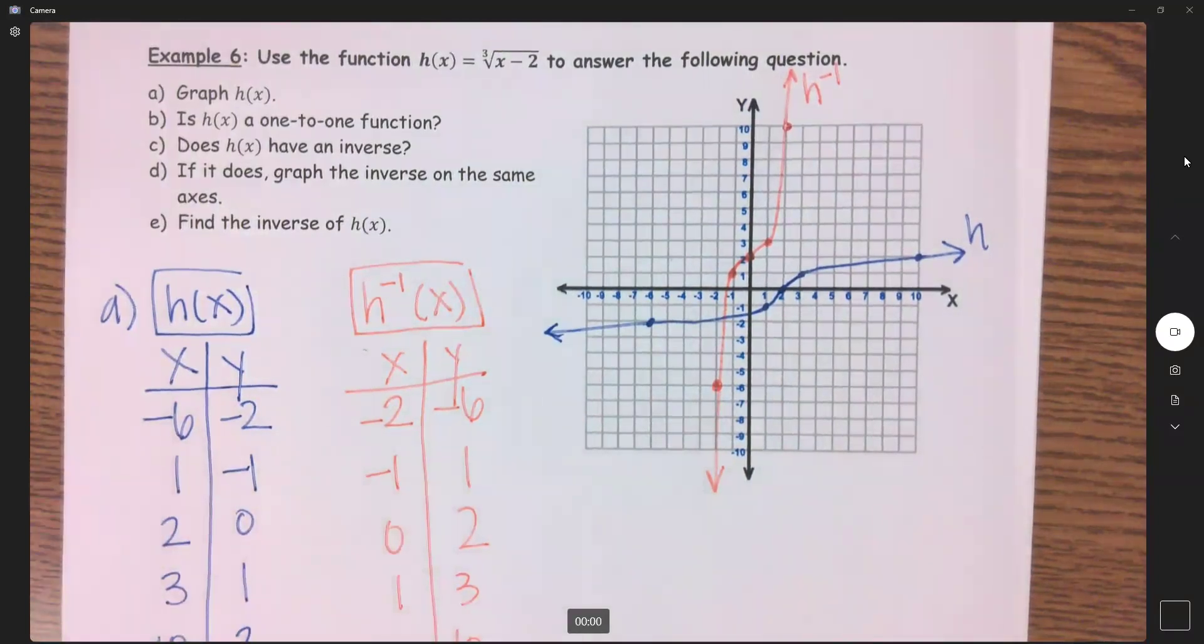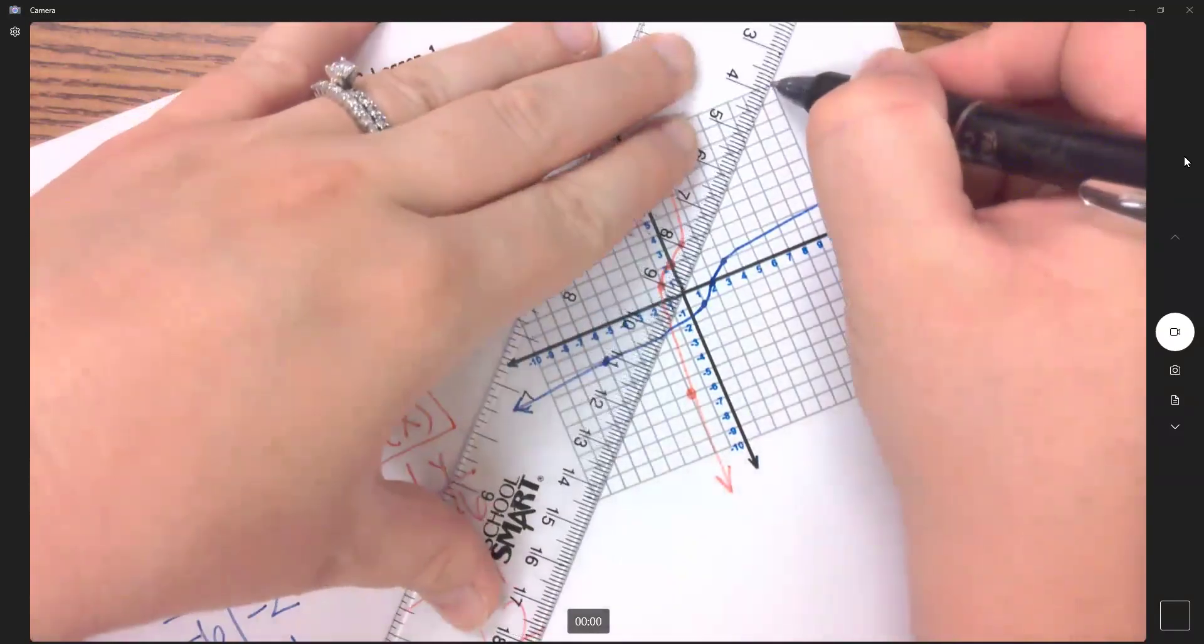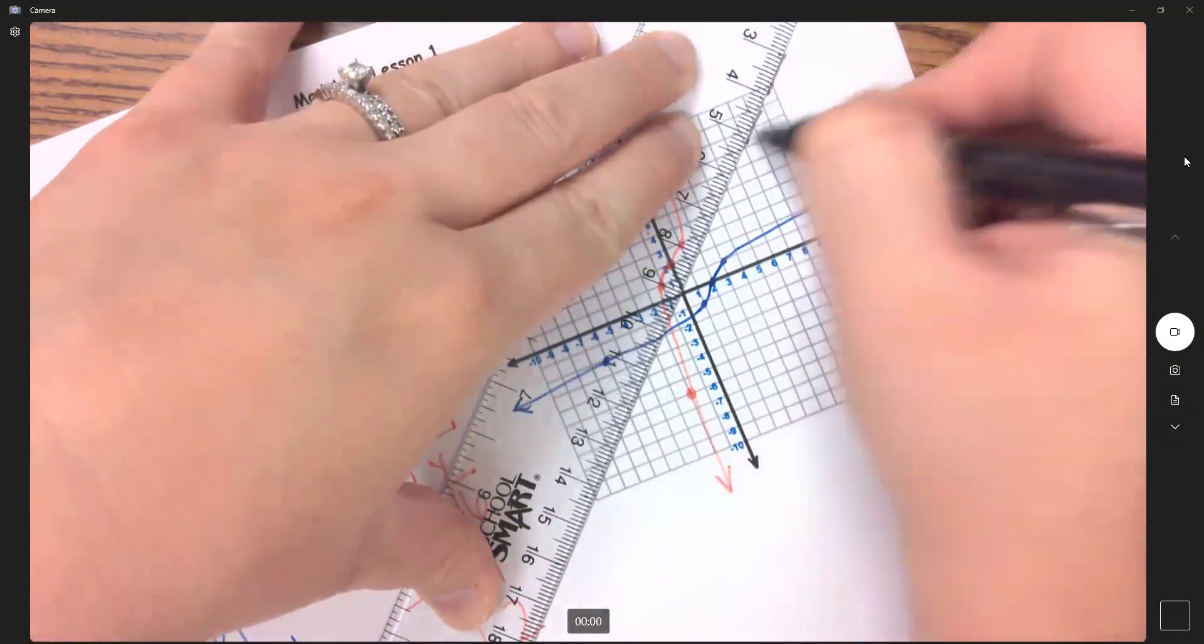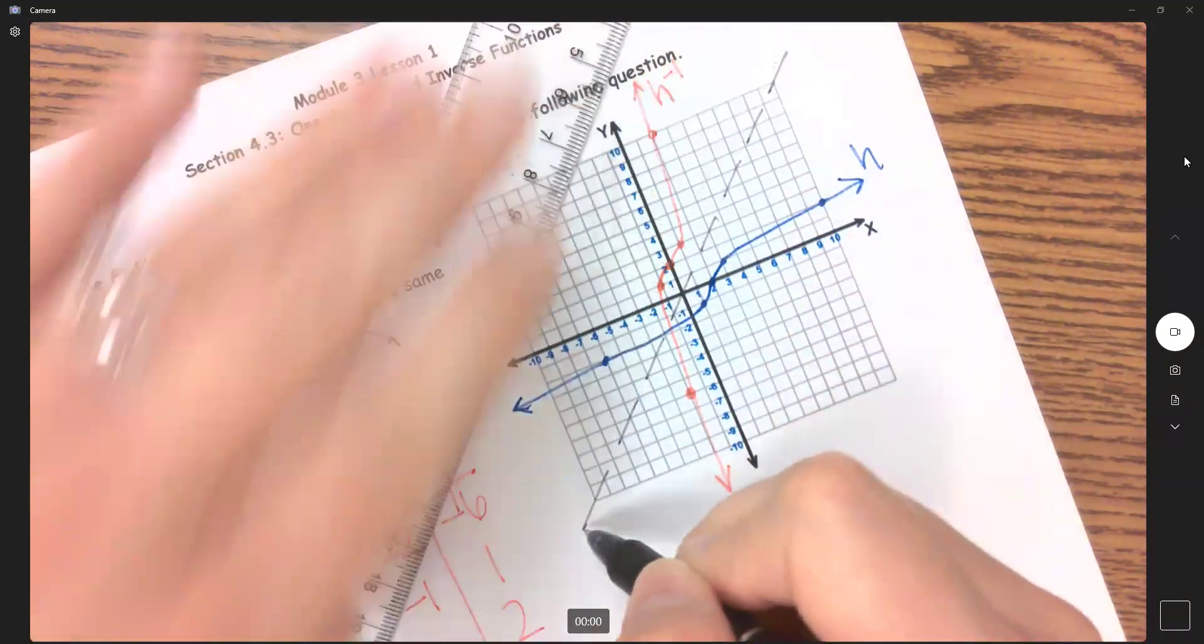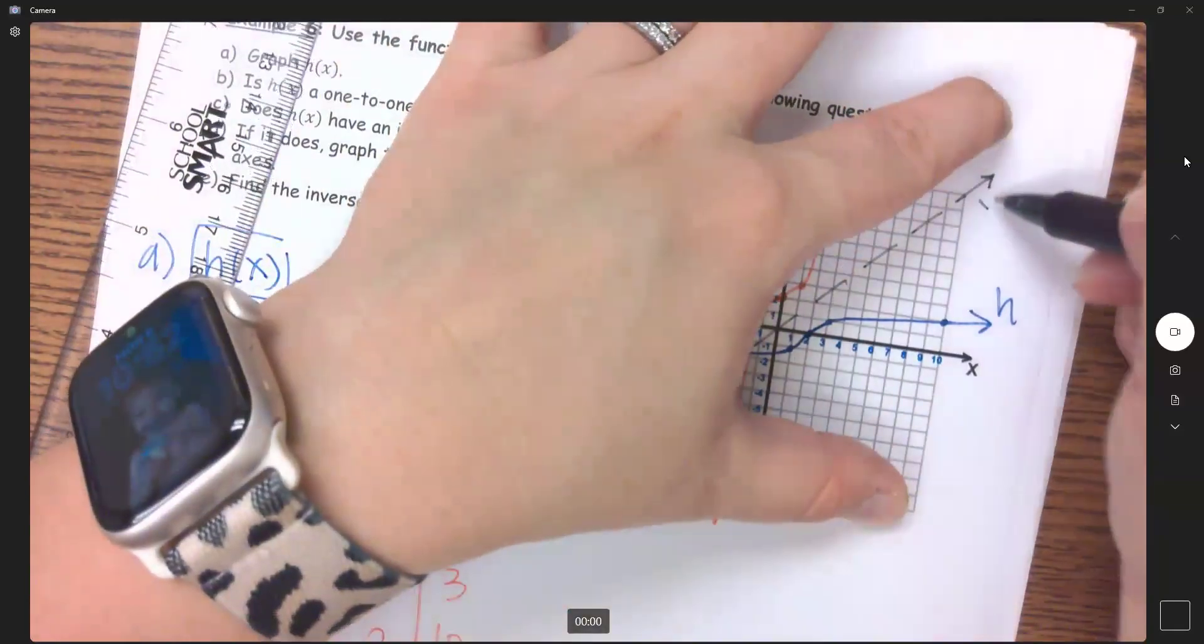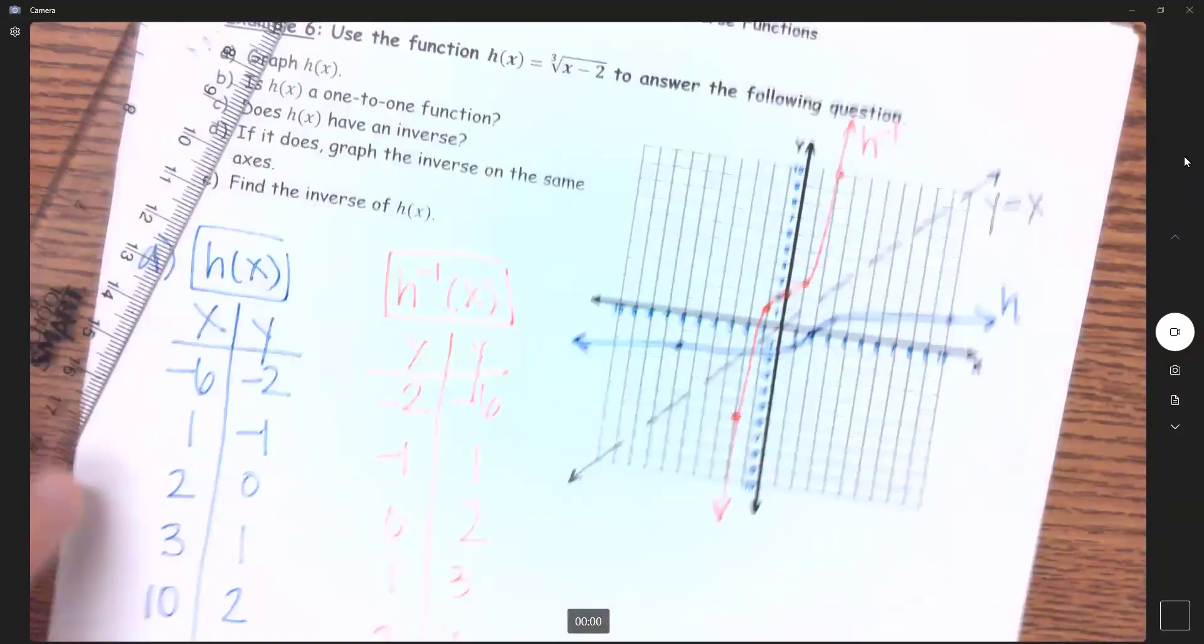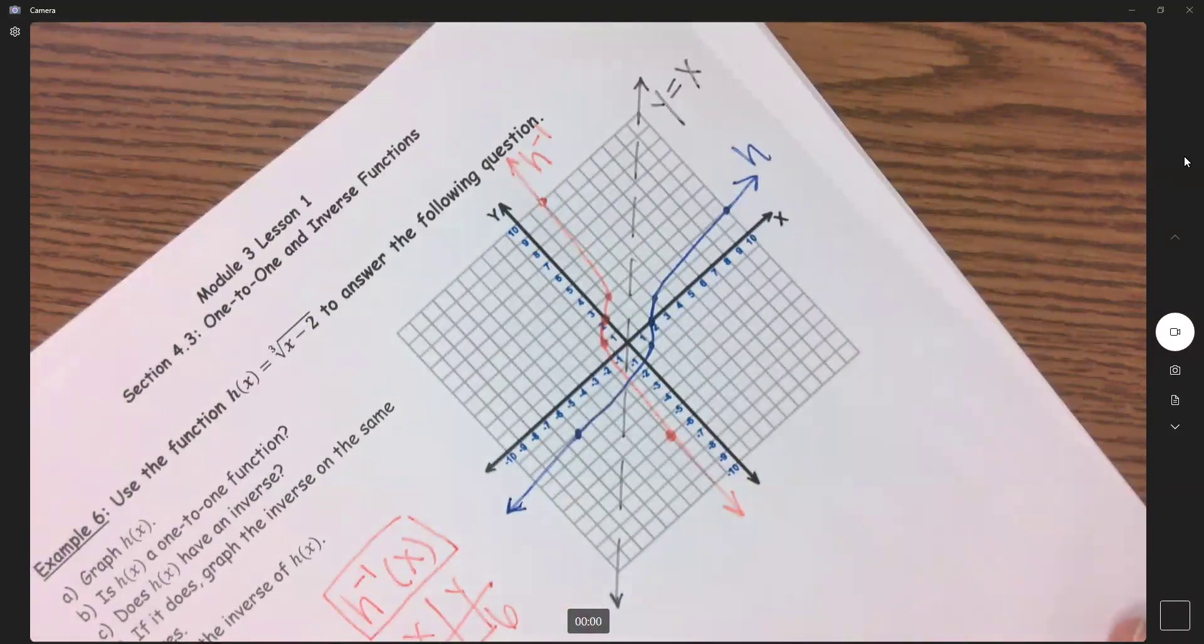And for visual purposes, again, I'm going to put in that line of symmetry, going corner to corner through the origin. And this is my line of Y equals X. And so you can see everything there is equal distance from that line of symmetry.